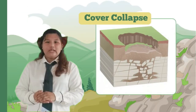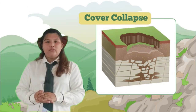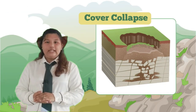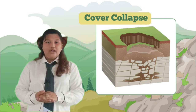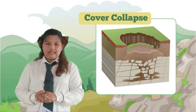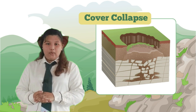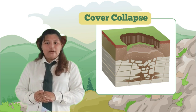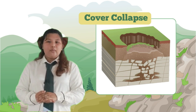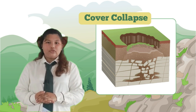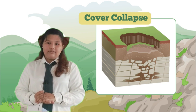Cover collapse sinkholes form when the roof of an underground cavity suddenly collapses, creating a sinkhole at the surface. They often appear as deep, steep-sided holes. Cover collapse sinkholes can occur abruptly and pose a serious threat to structures and infrastructure.